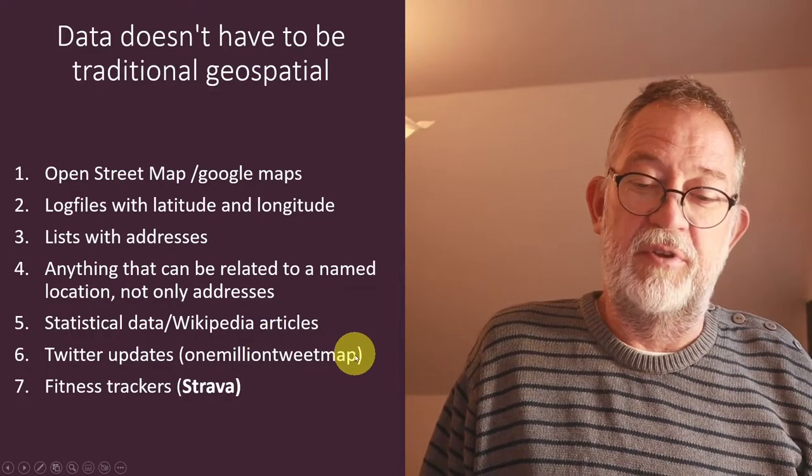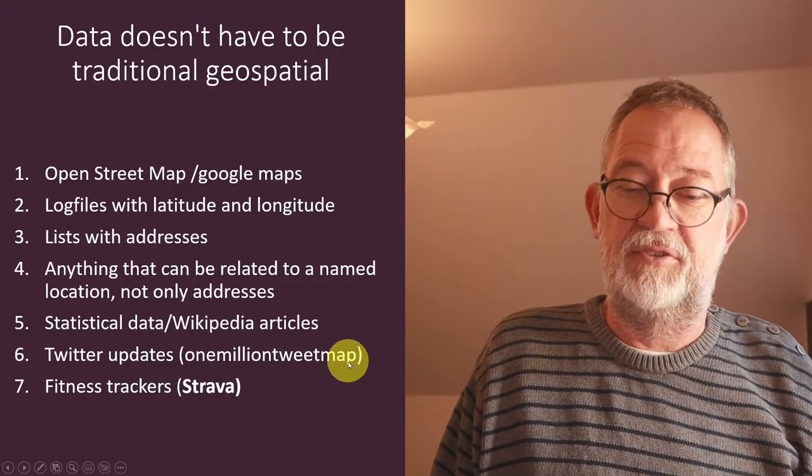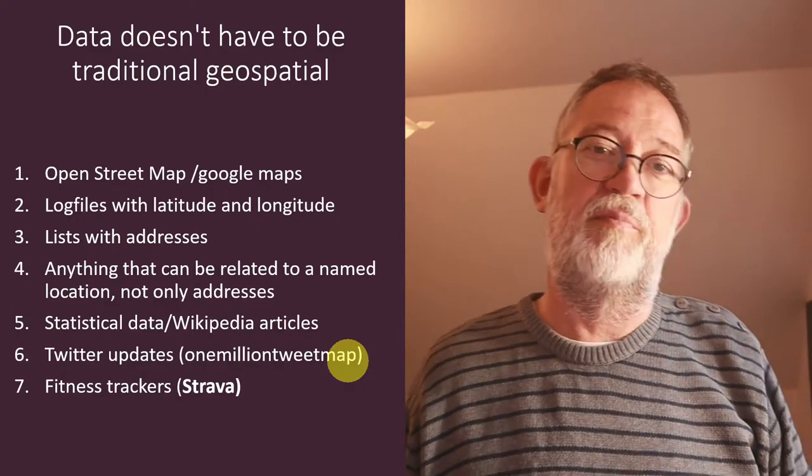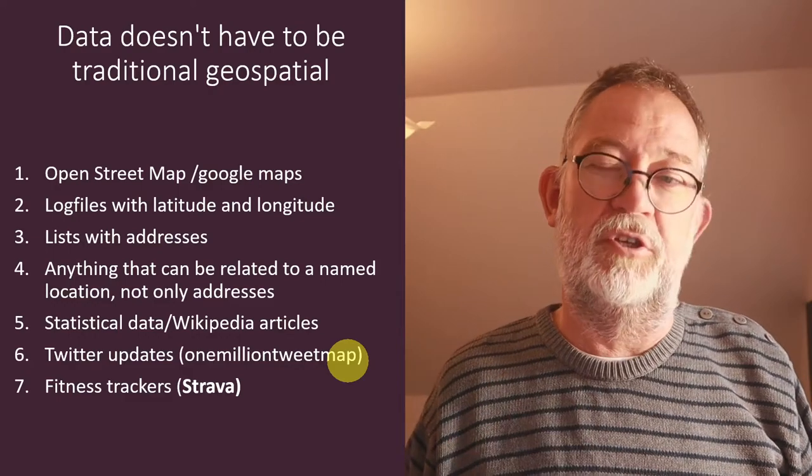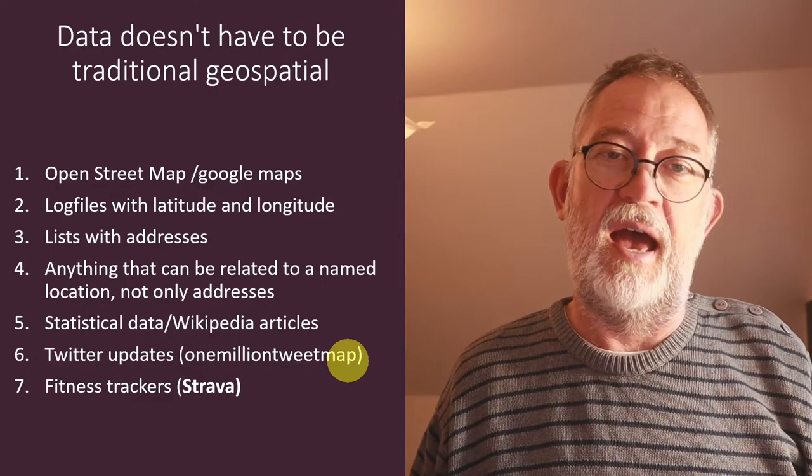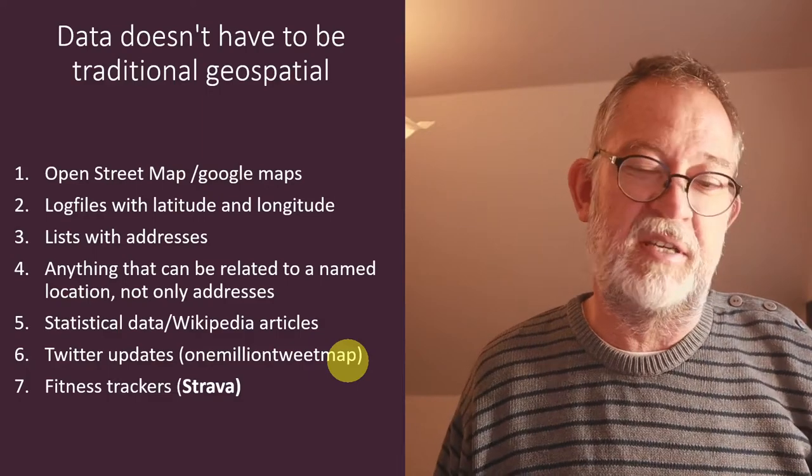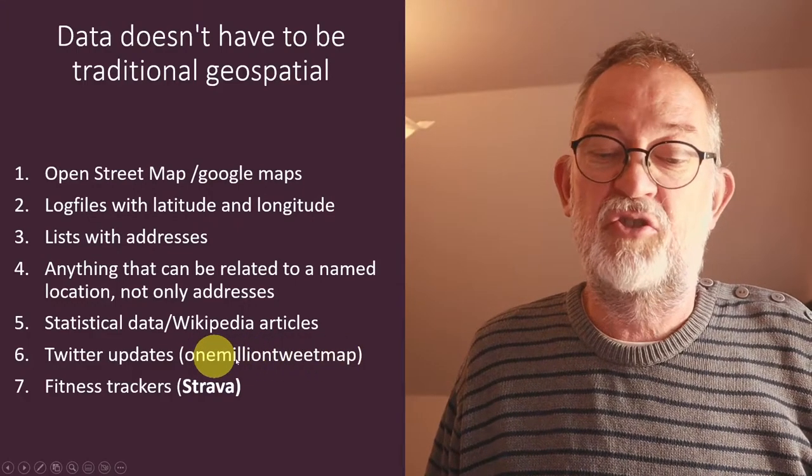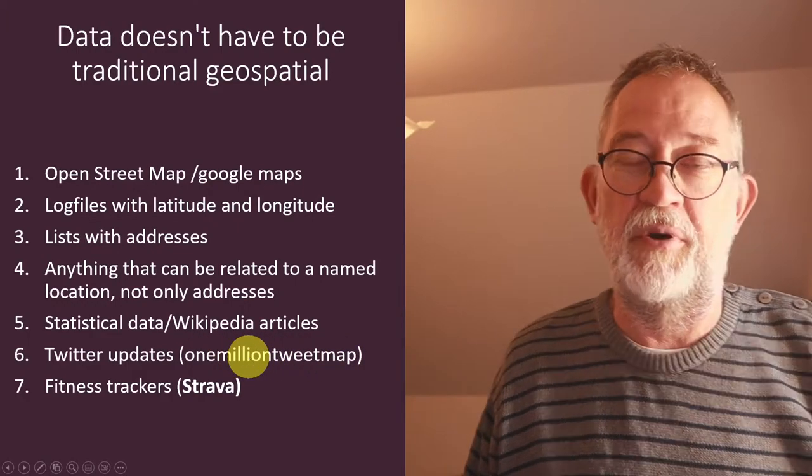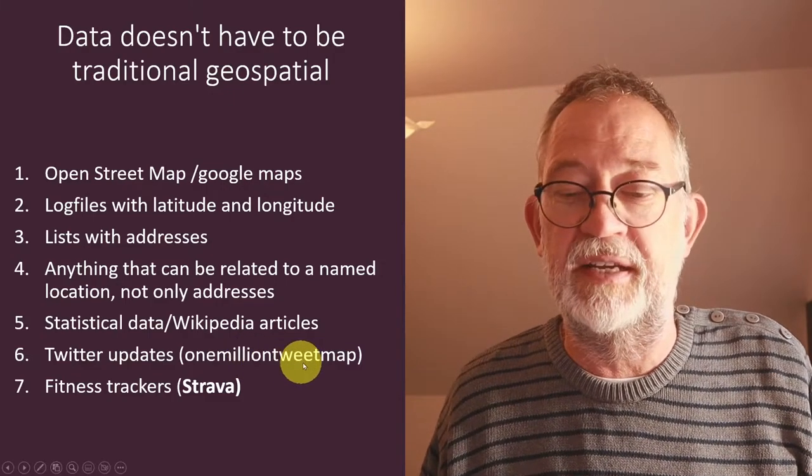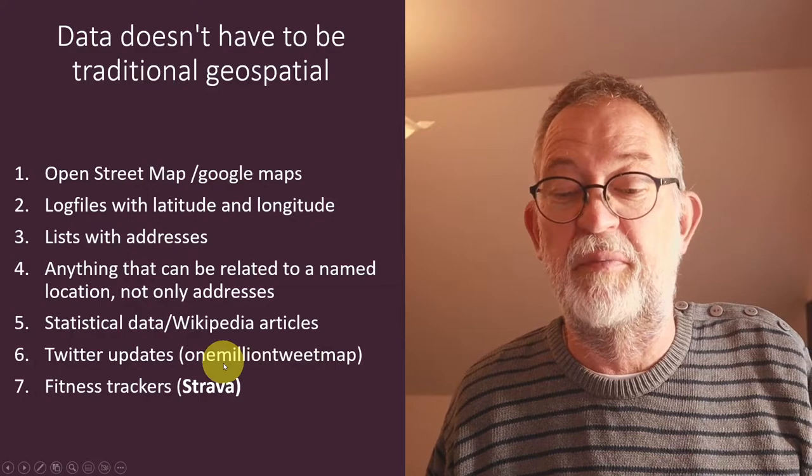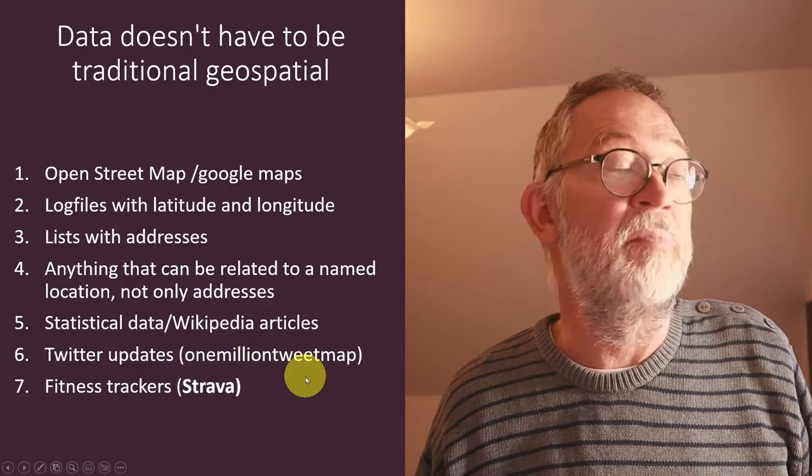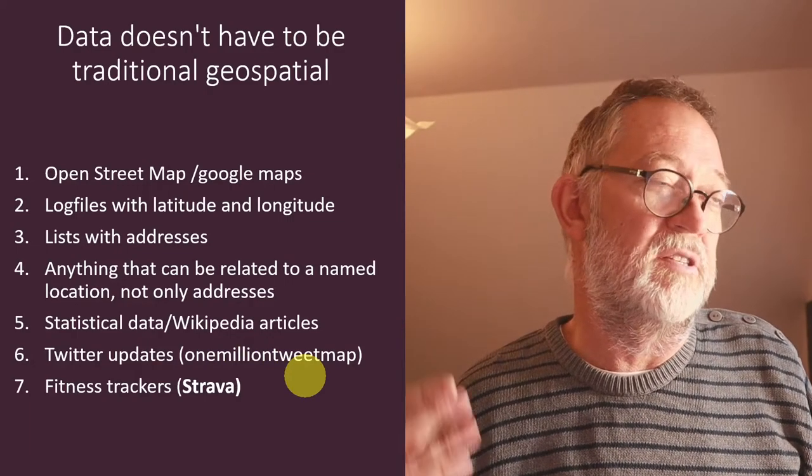Social media, once upon a time, was a really fantastic source of geodata. It's becoming less because, luckily, people are becoming more conscious of their privacy. Twitter is perhaps one of those that's still possible to get some really useful data from. An example—one of my favorite examples—is the One Million Tweet Map, basically a map of the tags from the latest one million tweets.